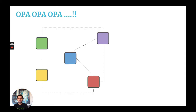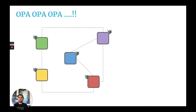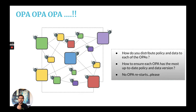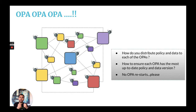Today, a lot of organizations are using microservices to build out their infrastructure, and they run OPA alongside these microservices to authorize access to those services. OPA's architectural flexibility allows them to do that — you can simply run OPA as a sidecar. Now imagine if you scale to tens, hundreds, or even thousands of microservices with OPA running next to each one. The question arises: how do you distribute policies and data to each of these OPAs?